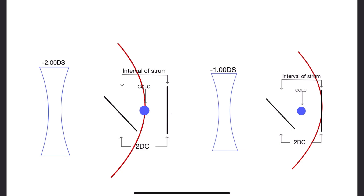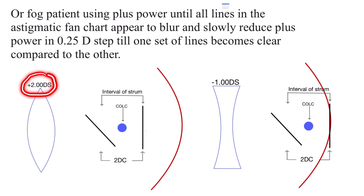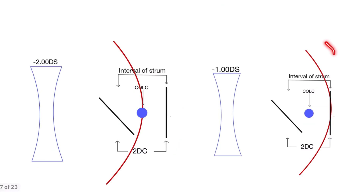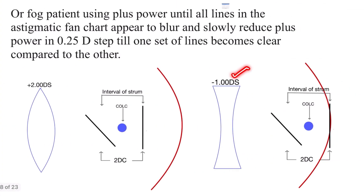At this point, the patient is going to report one of the lines as clearer compared to the other lines on the clock dial chart. Alternatively, you can fog the patient using plus power until all the lines in the astigmatic fan chart appear blurred, then slowly reduce the plus power in 0.25 diopter steps until one set of lines becomes clearer than the others. By both methods you achieve a similar result, which in this case is -1.